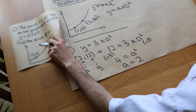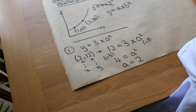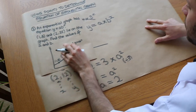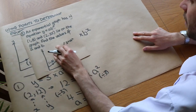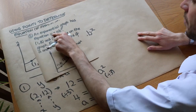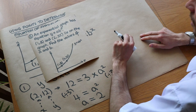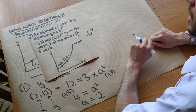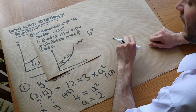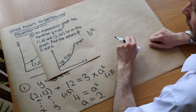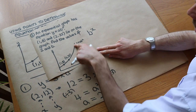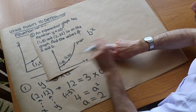Now let's do a slightly harder question where we have two unknown values, a and b. An exponential graph has equation y equals ab to the x, meaning a times b to the power of x. The points (1, 8) and (2, 32) lie on the graph. Find the values of a and b.